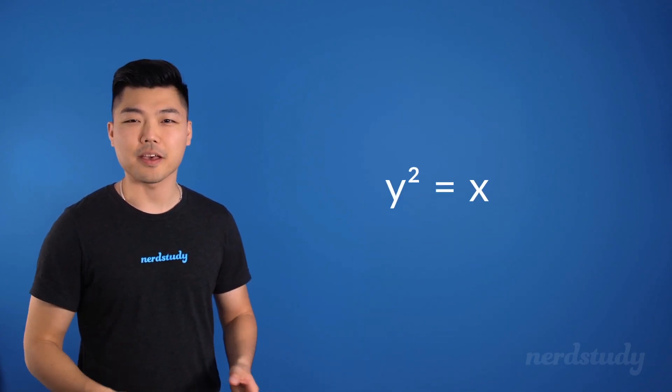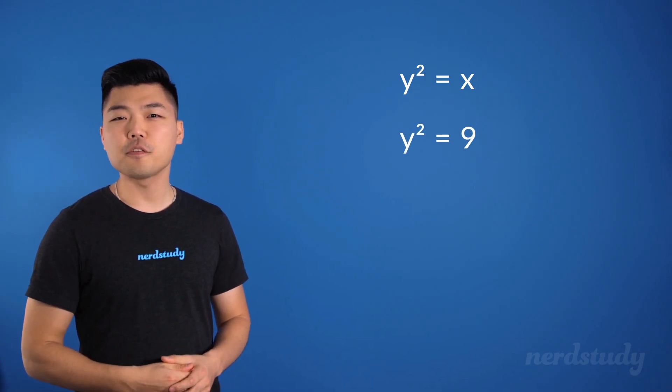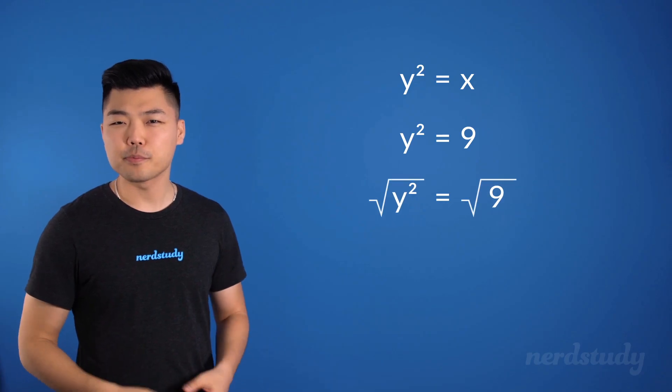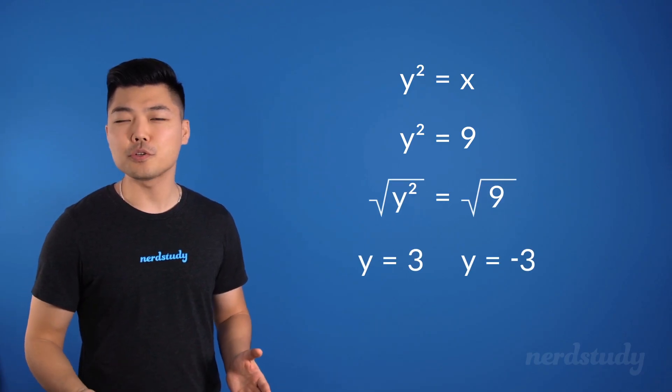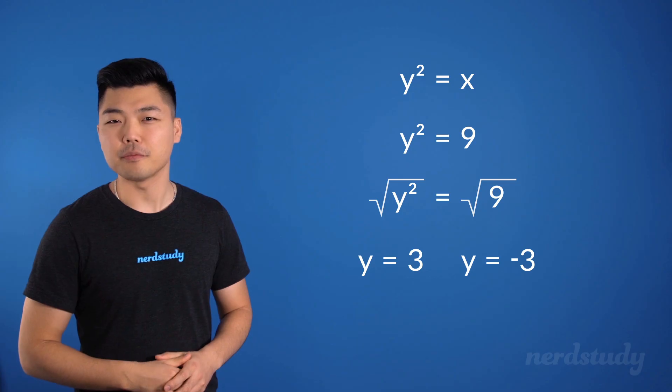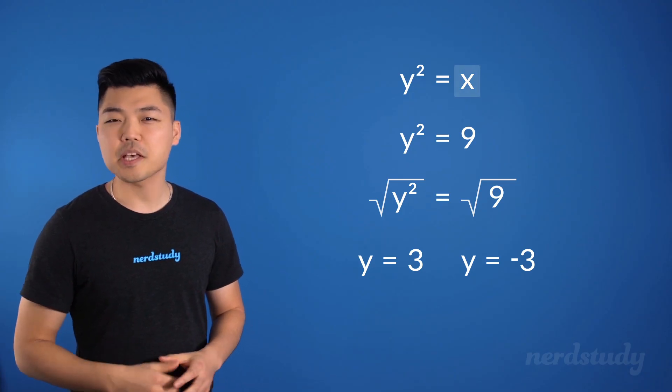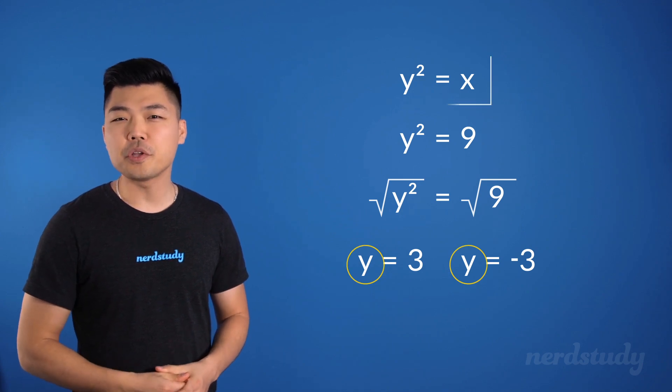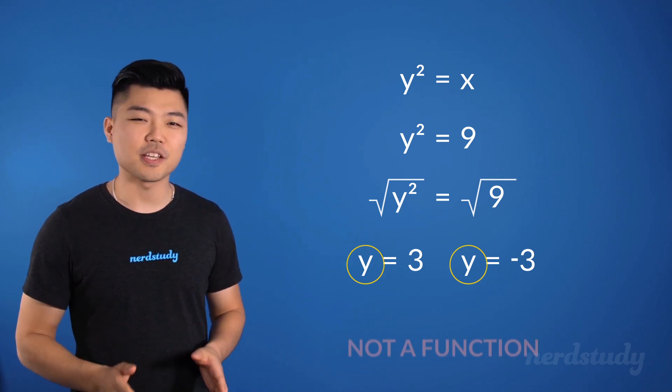An example of such an equation is y squared is equal to x. If we plug in 9 for x and try to solve for y, we see that if we square root both sides, we end up with y equals plus or minus 3. Since we only inputted one x value but got two y values in return, we know that this equation is not a function.